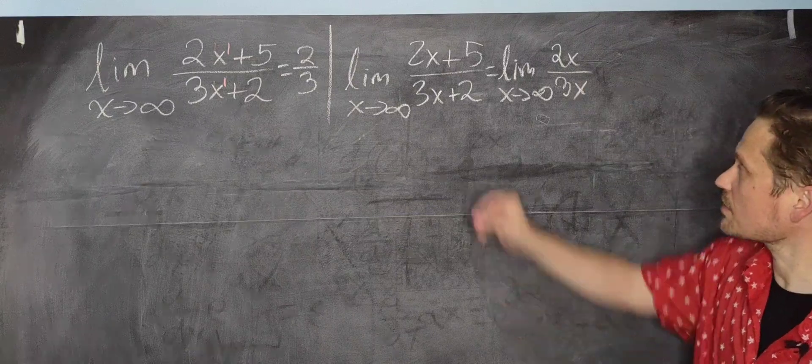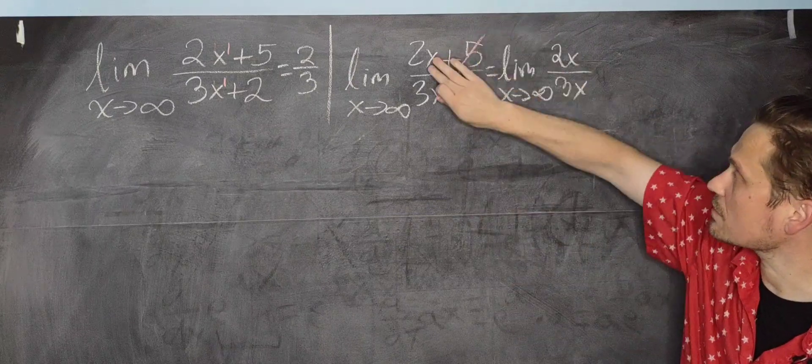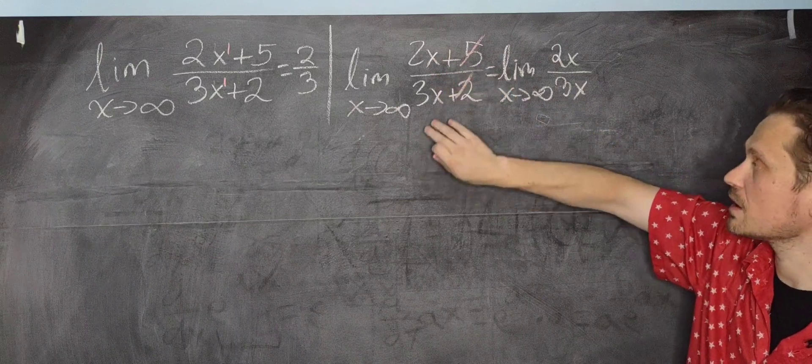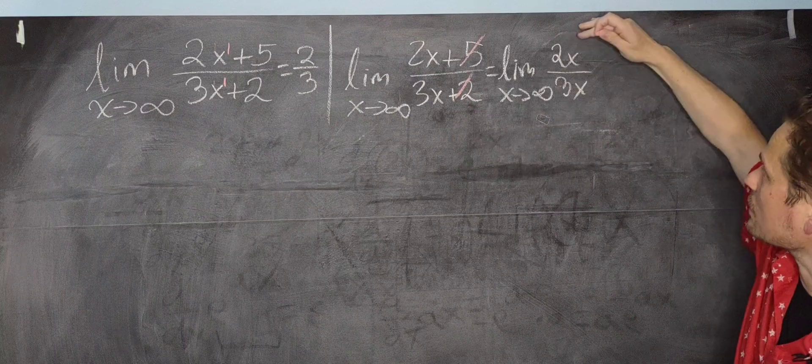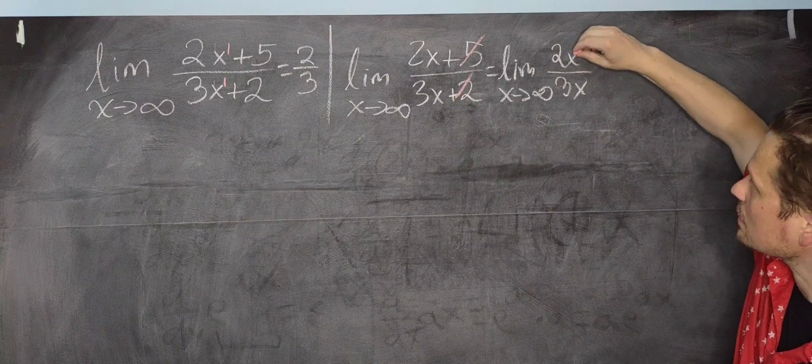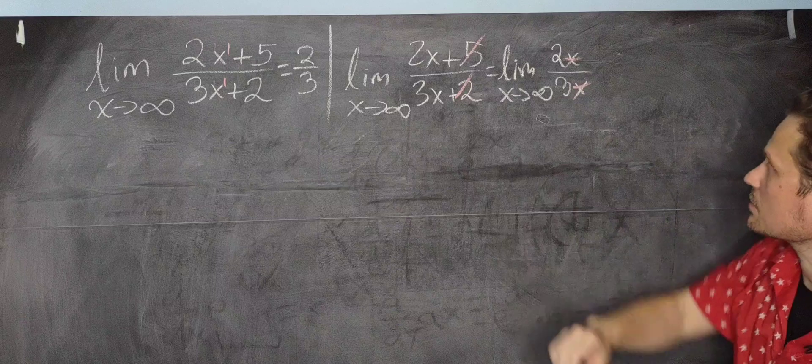And in this case, notice I've dropped the 5, because relative to 2x when x is large, 5 is irrelevant. Relative to 3x when x is large, 2 is irrelevant. Now we just have 2x over 3x. Notice that this is x, this is x. So now cancel this one with this one.